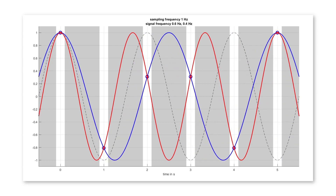We now indicate that by dropping the frequency again. You see that we find a frequency which is the same frequency distance from the Nyquist frequency, in this case lower. The blue one is slower, at 0.4 Hz. The Nyquist frequency was 0.5 Hz, and the high frequency signal has 0.6 Hz — so there is only 0.1 Hz difference to the Nyquist frequency. The sampling values of both signals are exactly the same at each sampling instant in time.